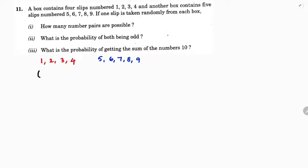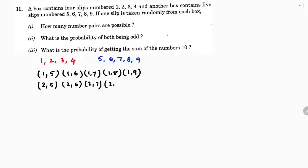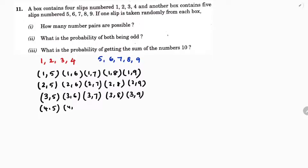First with one: (1,5), (1,6), (1,7), (1,8), (1,9). Next with two: (2,5), (2,6), (2,7), (2,8), (2,9). Next with three: (3,5), (3,6), (3,7), (3,8), (3,9). Next with four: (4,5), (4,6), (4,7), (4,8), (4,9). So the total number of pairs possible is 20, because four times five equals twenty.